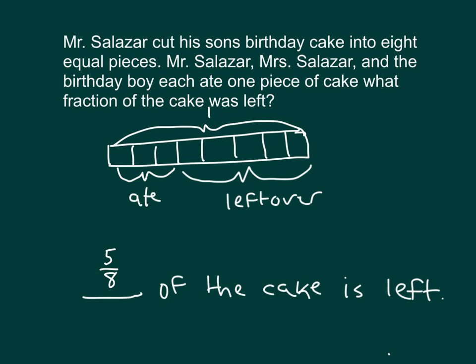So that tape diagram helps us figure out the answer. Showing our work, we had 1 whole minus the 3 eighths of the cake that Mr. Salazar, Mrs. Salazar, and the Birthday Boy each ate. 1 can be rewritten as 8 eighths, and 8 eighths minus 3 eighths is equal to 5 eighths.